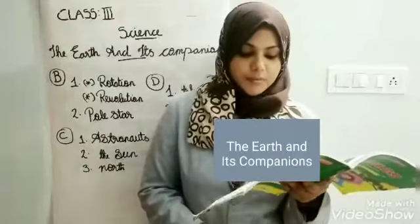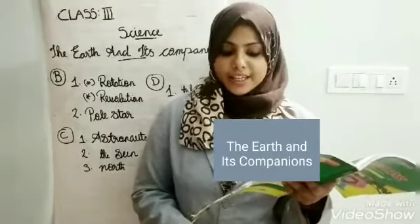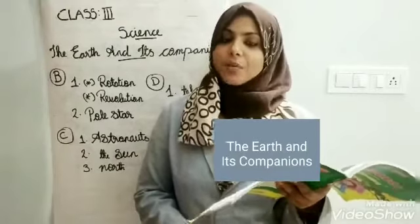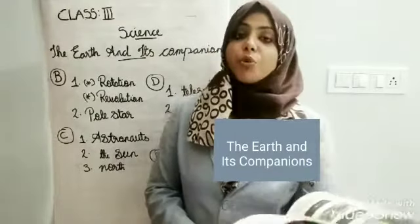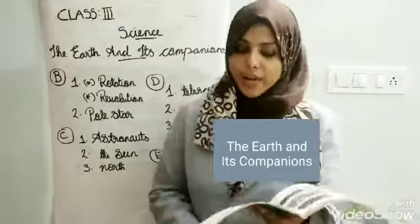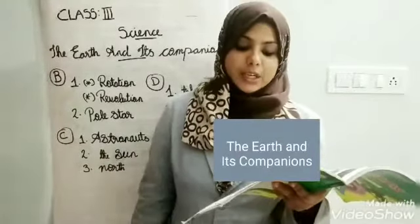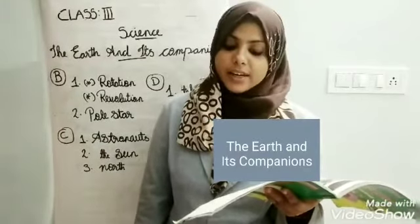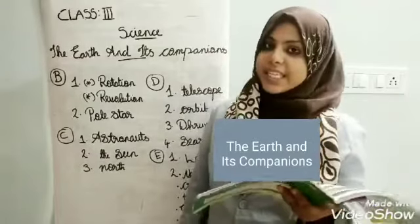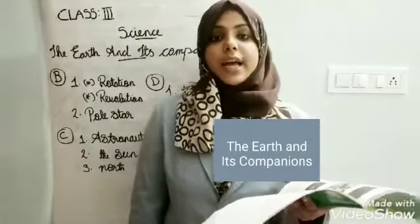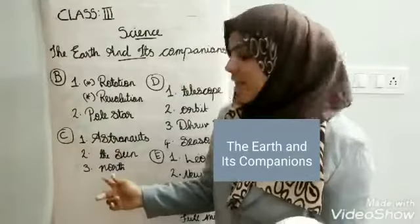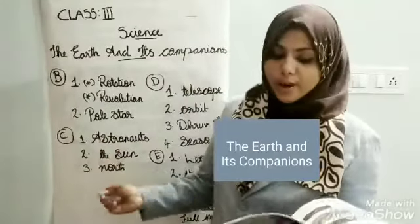Second question: the moon reflects the light of — Option A: the sun, Option B: a star, Option C: the Earth. We know the moon reflects the light of the sun. Third question: pole star helps to find the direction — Option A: east, Option B: north, Option C: south. We know the pole star helps to find the north direction, so the right answer is Option B: north.